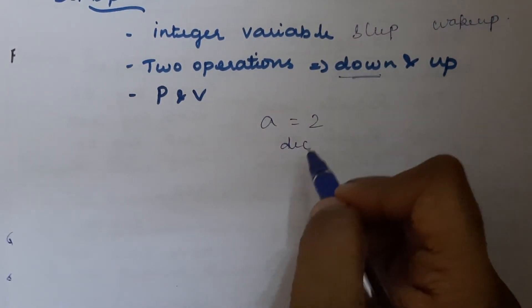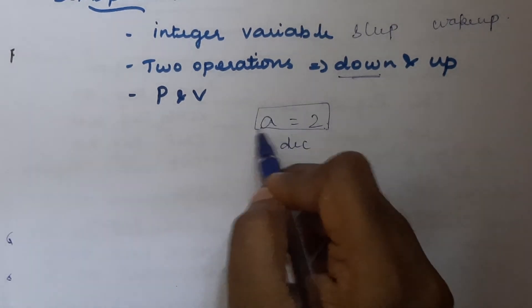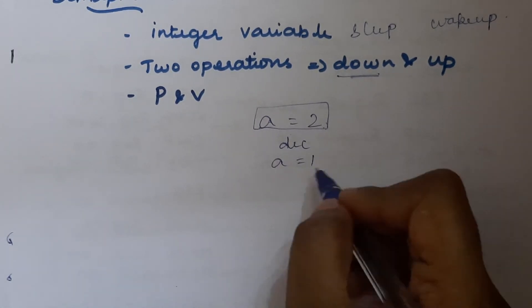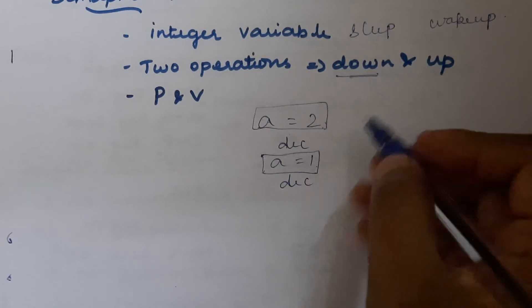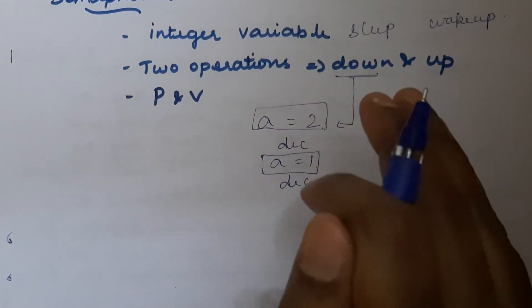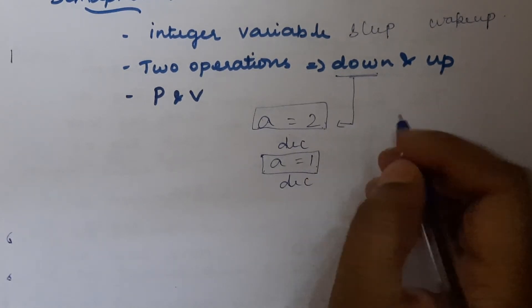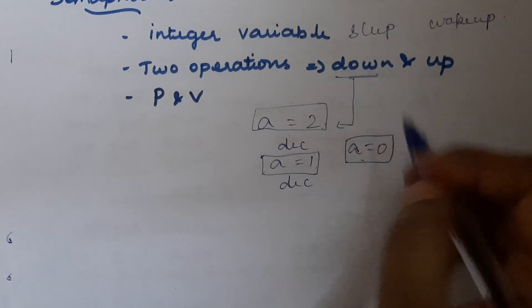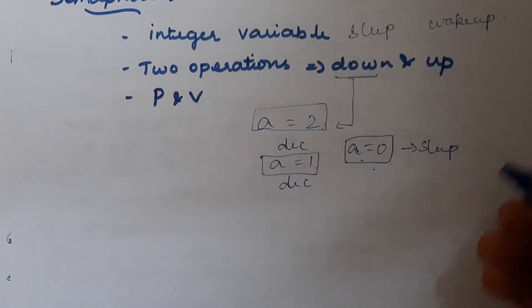The down operation checks the semaphore variable value. If it is greater than zero, it performs the decrement operation and continues. It checks again — if 'a' is still greater than zero, it decrements again and continues. The down operation always decrements the semaphore variable after checking that it is greater than zero. If 'a' equals zero, the down operation does not decrement it — instead, it makes the particular process sleep, because it must wait until the other process completes its execution.